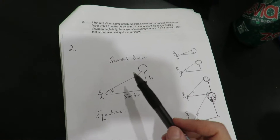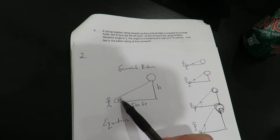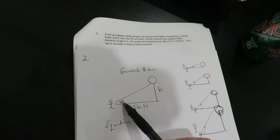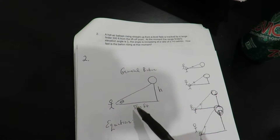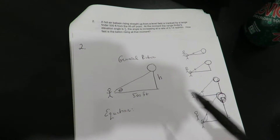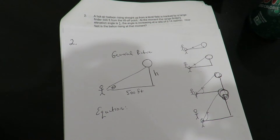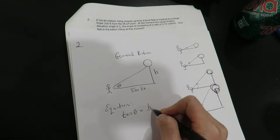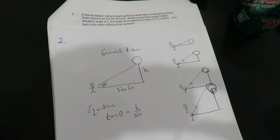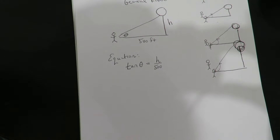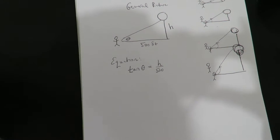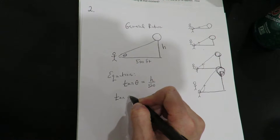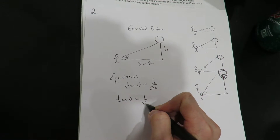I've got to notice what I have. I have an angle, so this has to be trig. I have an angle, an opposite side, and an adjacent side — so I need a trig function. The tangent of theta is equal to h over 500. I'm going to write it slightly differently to help with the derivative: tangent of theta equals one over 500 times h.